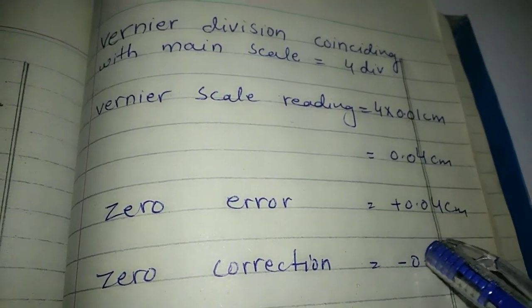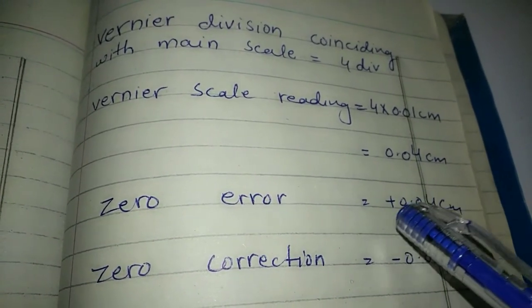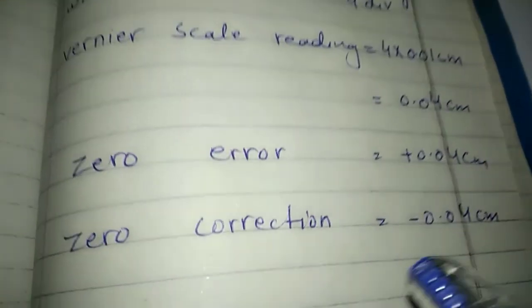This is the answer for zero error. Now to find zero correction.